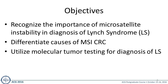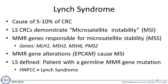Lynch syndrome causes about 5 to 10% of all colorectal cancers, and the cancers in individuals with Lynch syndrome demonstrate microsatellite instability. There are 4 different mismatch repair genes in your germline: MLH1, MSH2, MSH6, and PMS2. When there are mutations in these mismatch repair genes, that causes microsatellite instability within a colorectal cancer. Lynch syndrome, by definition, is a patient who has a germline mutation in one of the mismatch repair genes. It's very important to know that HNPCC does not equal Lynch syndrome.